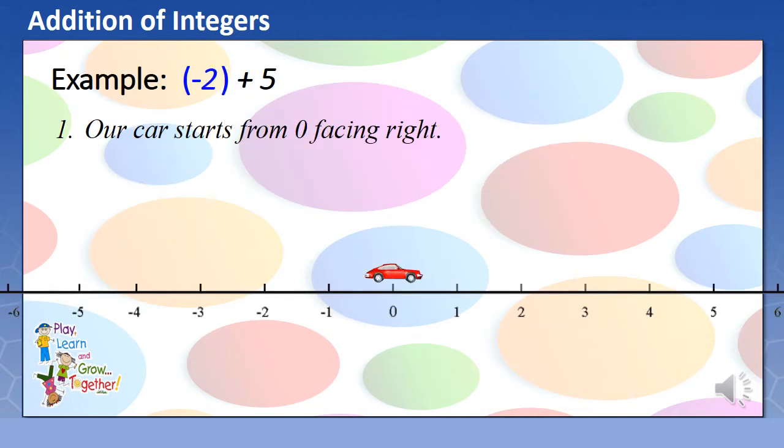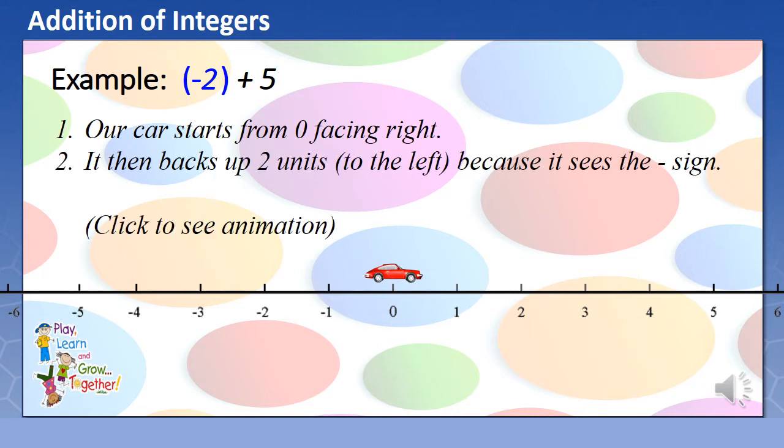Let us have our first example: Negative 2 plus positive 5. Remember, our car starts from 0 facing right. From 0, it then backs up 2 units to the left because it sees the negative sign.